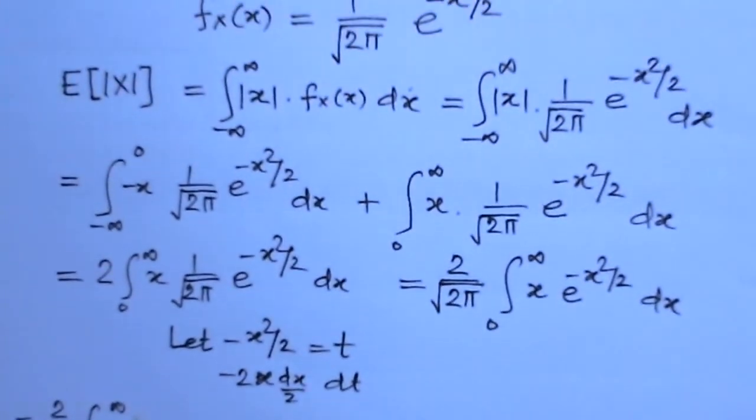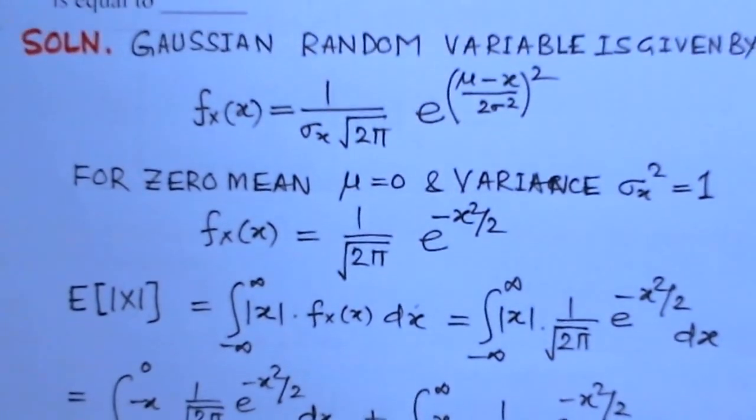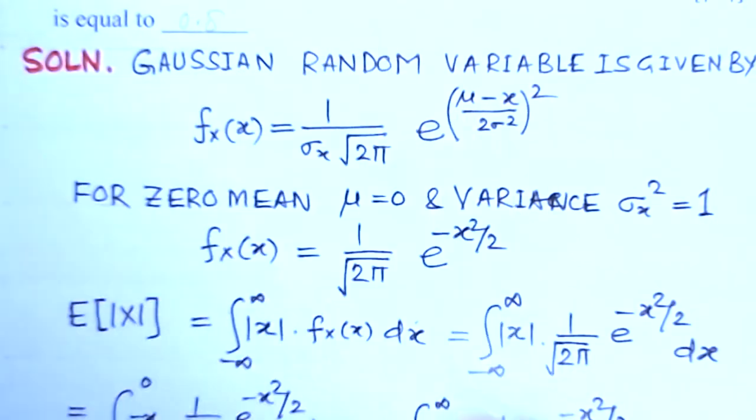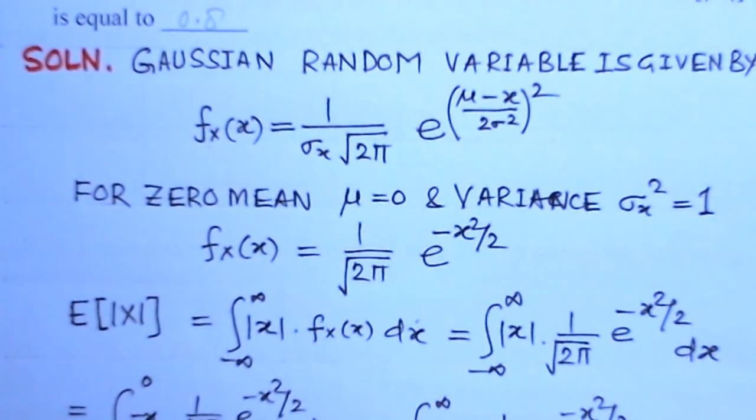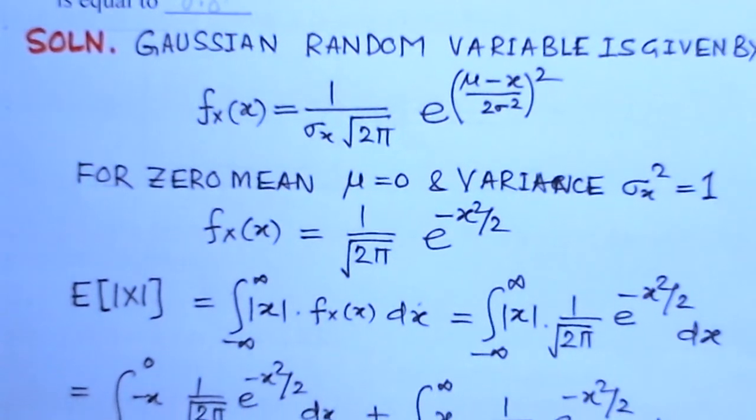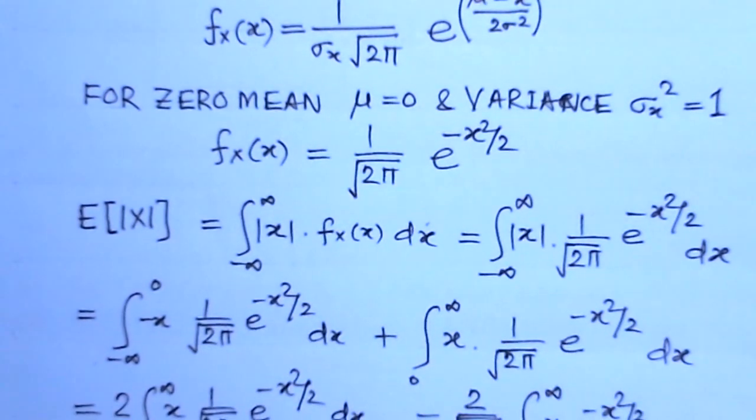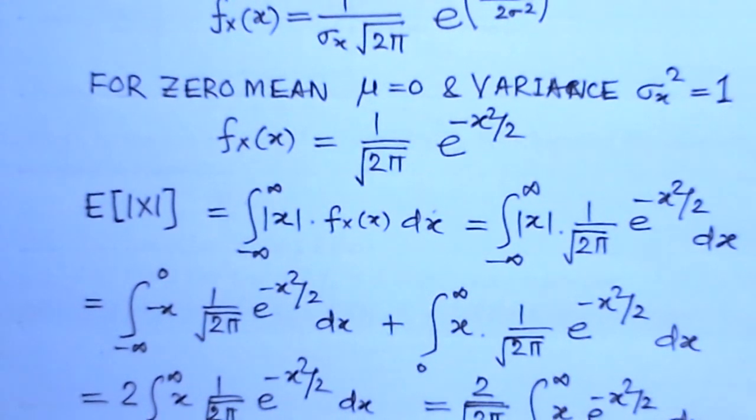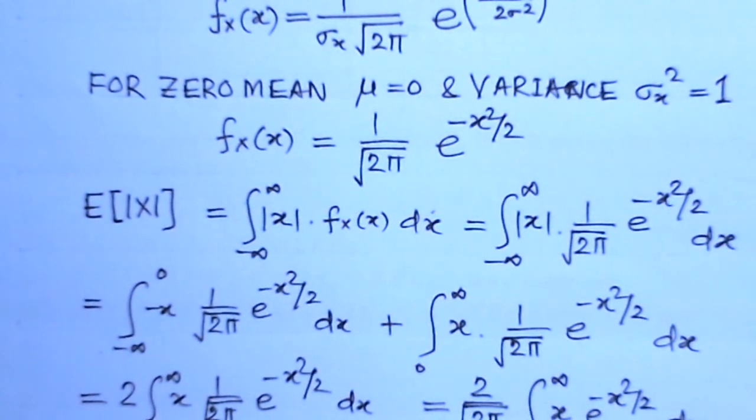So this is the value here. Because it is not a question of options, the value here is 0.8. This is the answer to this problem. Although it is a very simple problem, the distribution considered here is a very important distribution that you should know.